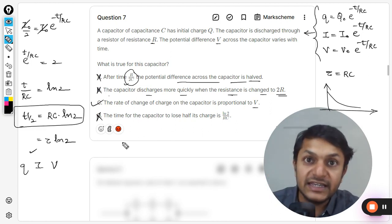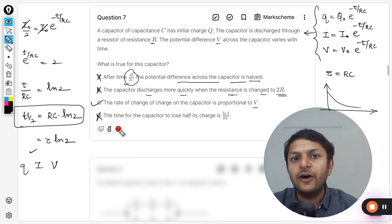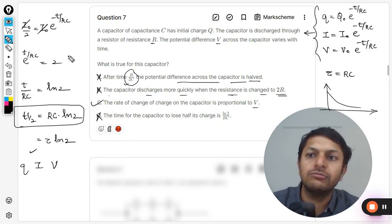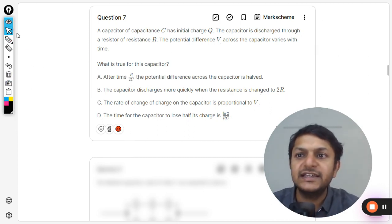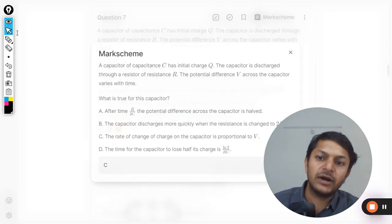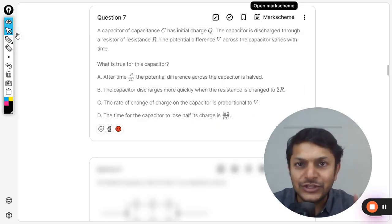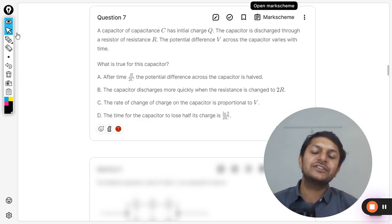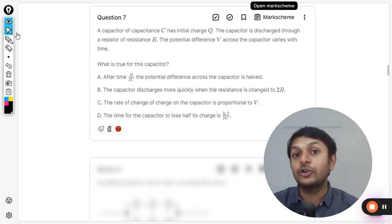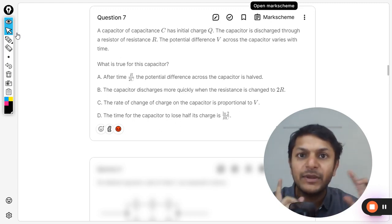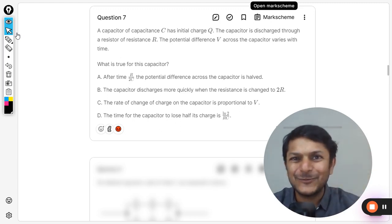So this is how we do this question, and I am going to show you the mark scheme also for this. Let us see what is the answer given in the mark scheme. Clearly the answer is C. So this is how we do this question, my dear students. This is Professor Varun. Please subscribe to the YouTube channel and also please join the YouTube channel if you want to access the paper two questions. All the best, bye!